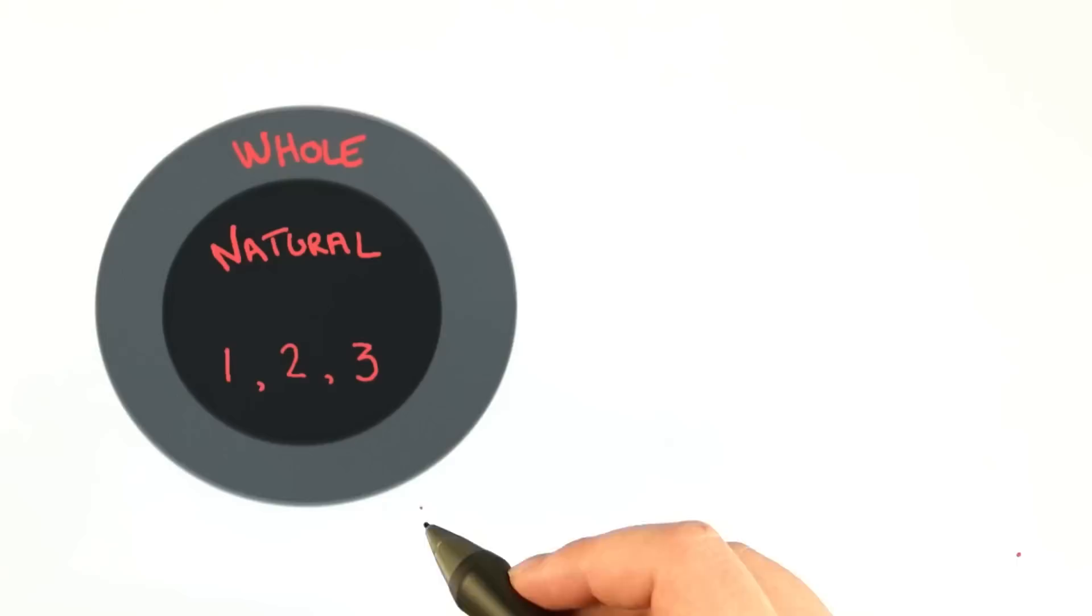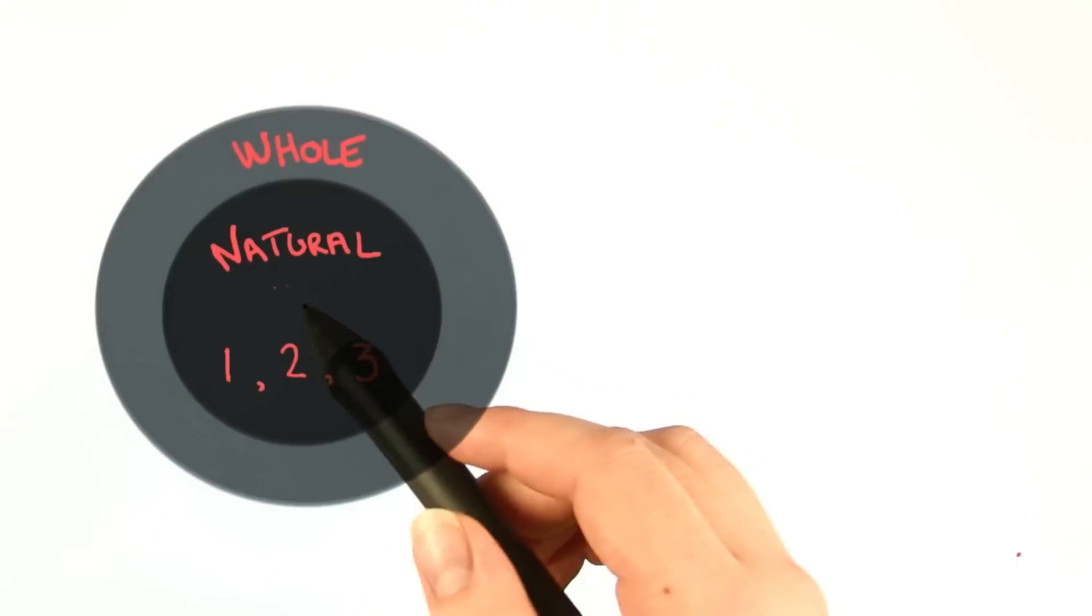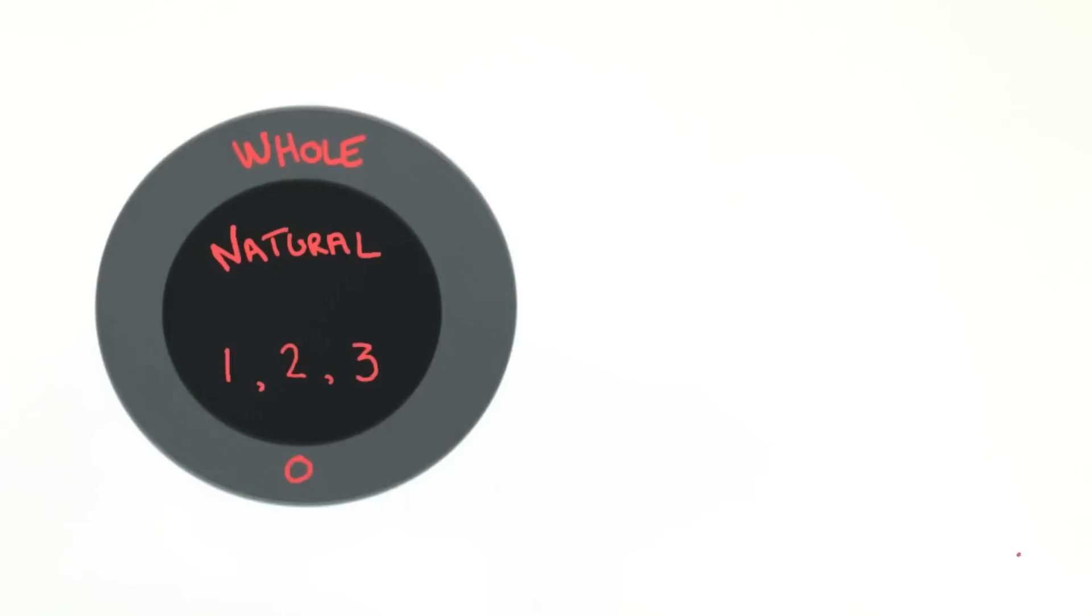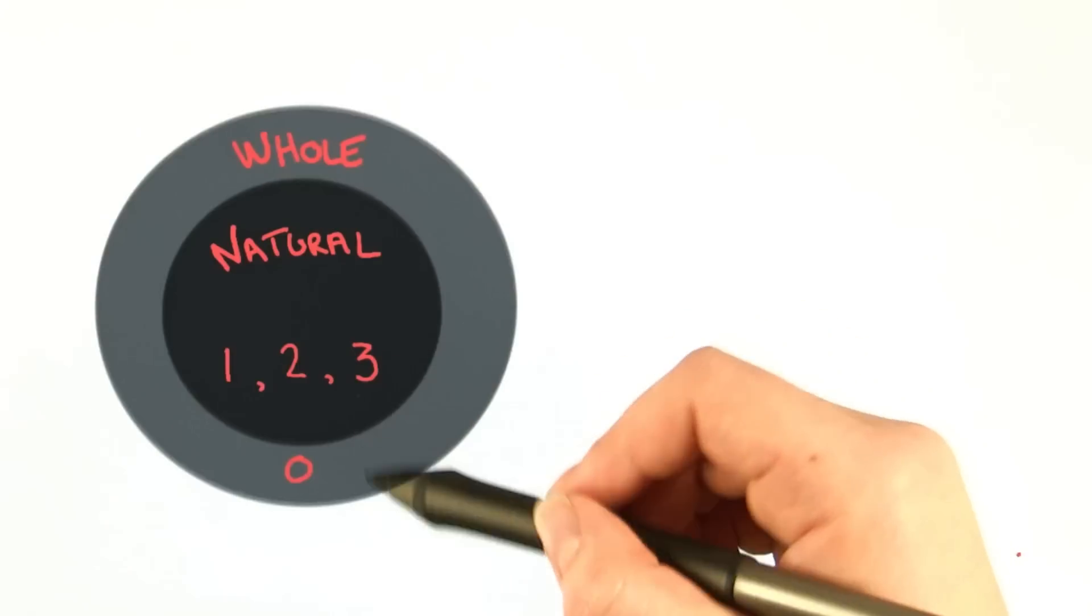The whole numbers include all of these numbers, but also zero. So you can see that our sets of numbers are starting to build on each other.